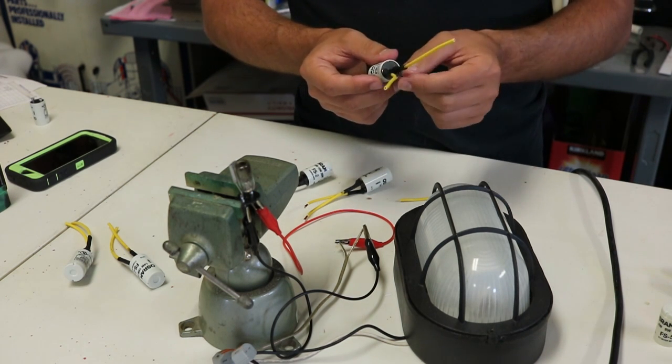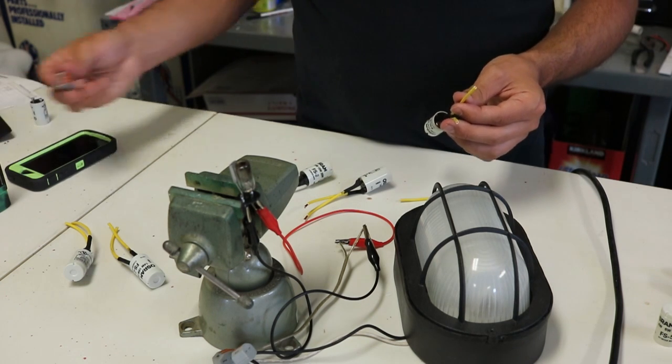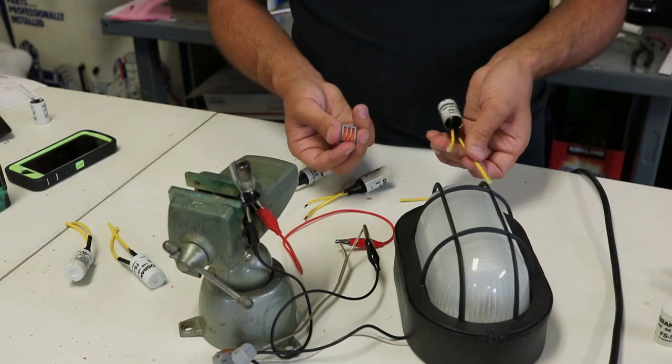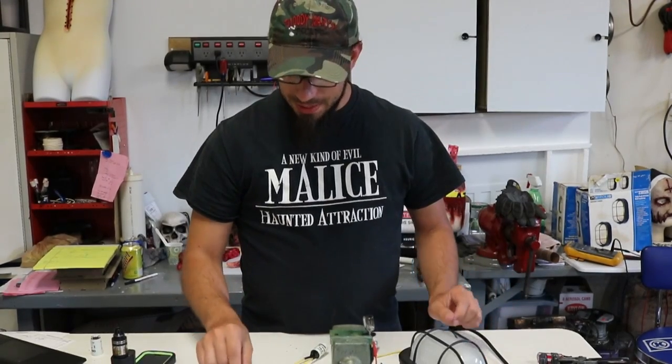Got it good and tight, cut the excess off, and put heat shrink on it. With these Wago connectors, if one goes out, I can change it in about 30 seconds. I can do it at midnight if I need to. All right guys, that's it.